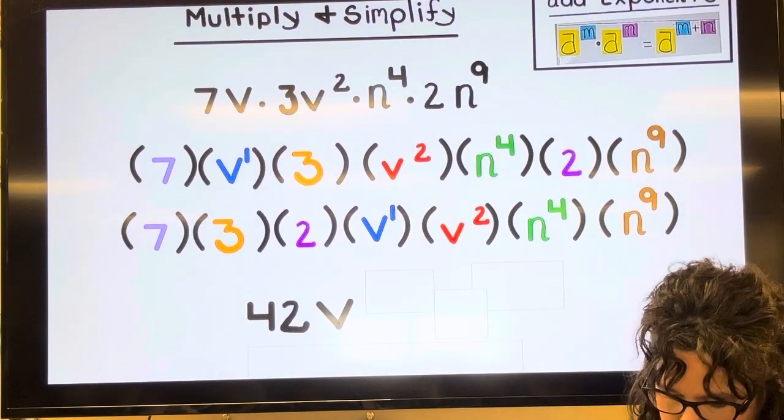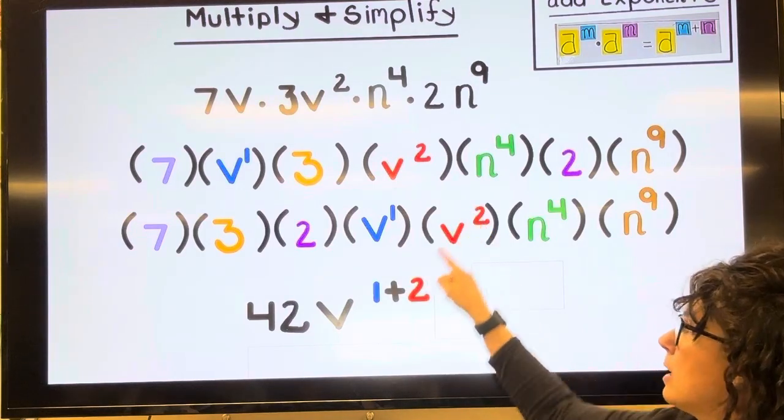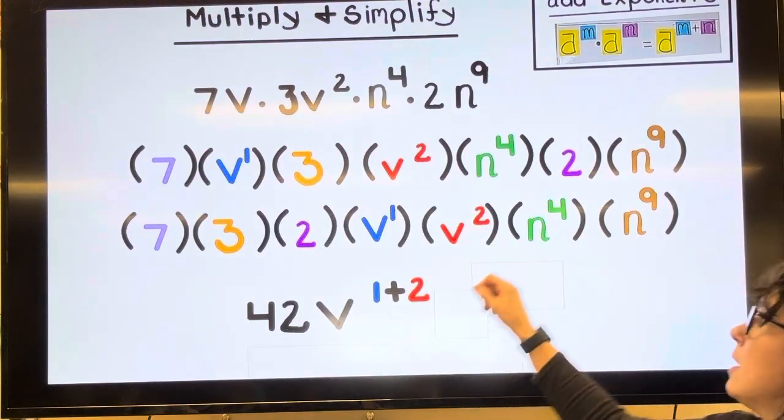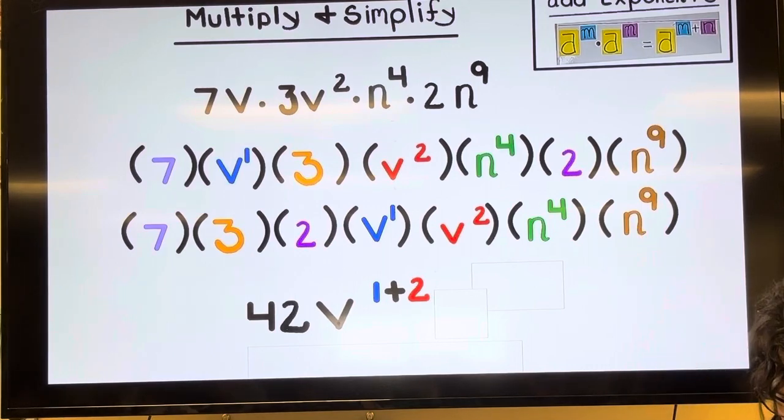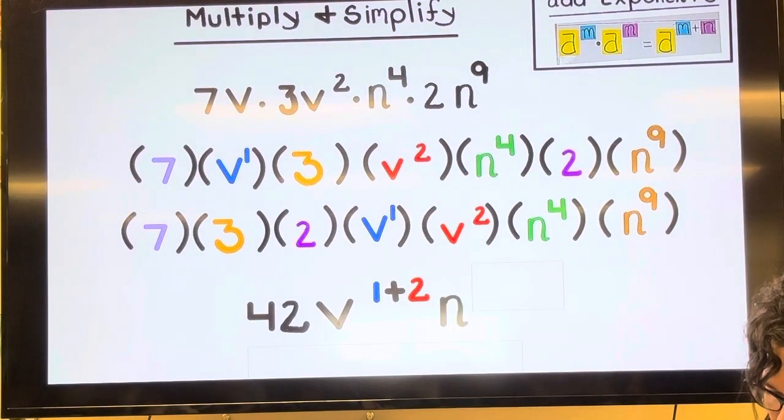Then this is going to become V to the power of 1 plus 2 and then the N is going to be to the power of 4 plus 9.